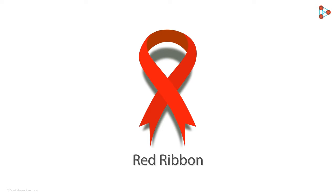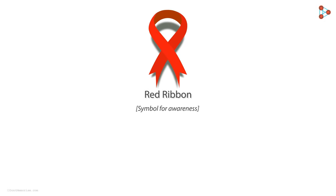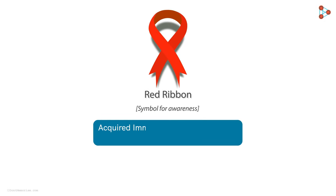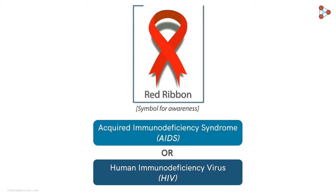This symbol of a red ribbon is often seen at many places. It is a symbol used to create awareness about Acquired Immunodeficiency Syndrome, abbreviated as AIDS, or simply Human Immunodeficiency Virus, abbreviated as HIV. The concept of the red ribbon was adopted to create awareness for the disease as well as to morally uplift the people suffering from it.